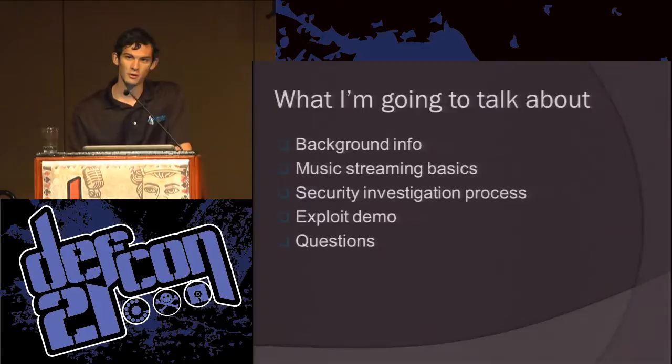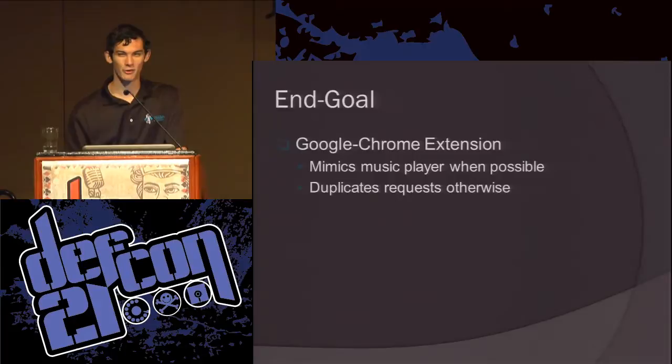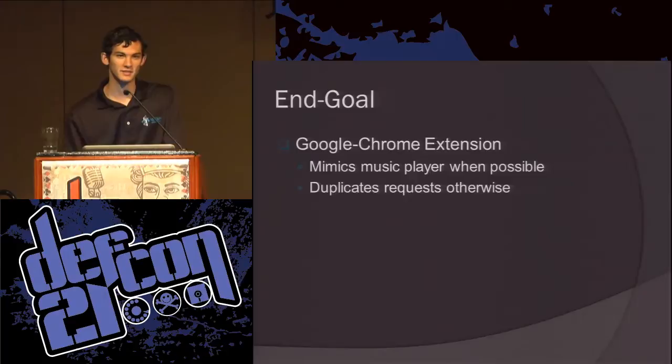The original end goal was to release a Google Chrome extension with all the different exploits. The way it would work is that it would mimic the music player whenever possible — whenever I was smart enough to reverse engineer the code and generate requests the way they did. Otherwise, I would log whenever I saw an MP3 flying by, match the syntax, and every time something matching that syntax appears, go get that song. The end result is something sitting in the background that lets you download every song you listen to.